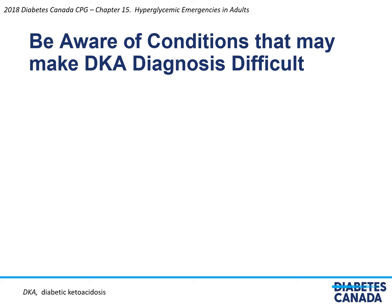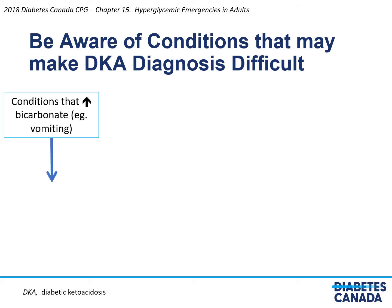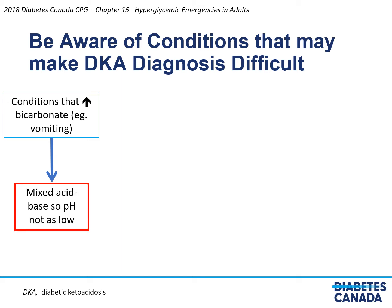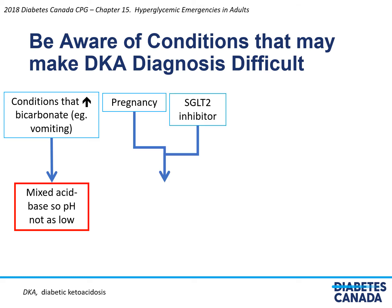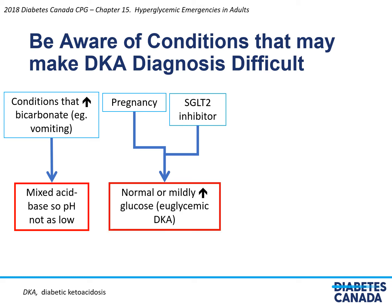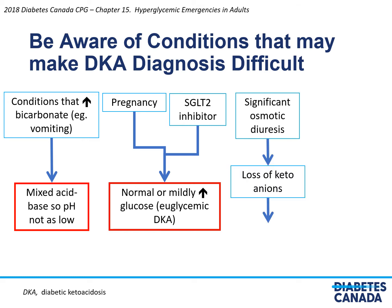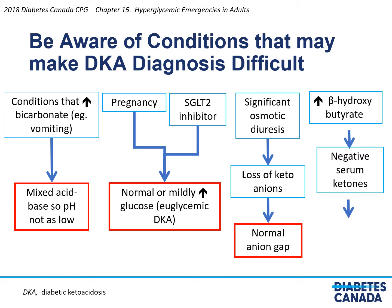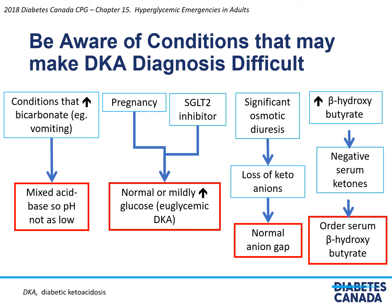It's important to be aware of conditions that may make the diagnosis of DKA difficult. Conditions that increase bicarbonate, for example vomiting, result in mixed acid-base disturbance, so the pH is not as low as one would normally expect. Pregnancy or the use of SGLT2 inhibitors can result in normal or only mildly elevated glucose — so-called euglycemic DKA. A significant osmotic diuresis can cause loss of keto anions, which can normalize or near-normalize the anion gap. Finally, if the keto anion is predominantly beta-hydroxybutyrate, this results in negative serum ketones because it's not measured in the nitroprusside reaction. If you're strongly suspicious of DKA and the serum and urine ketones are negative, you should order serum beta-hydroxybutyrate.